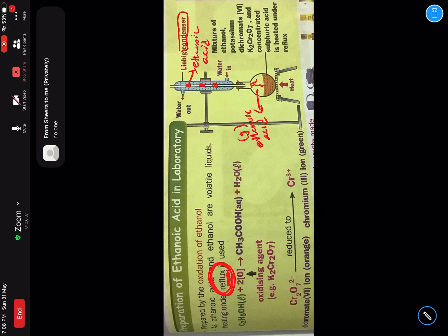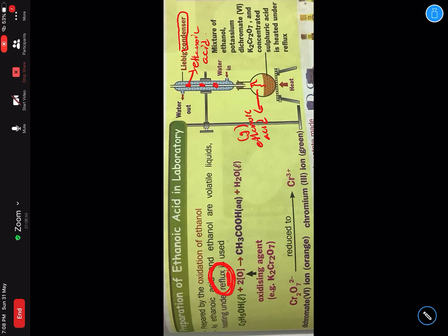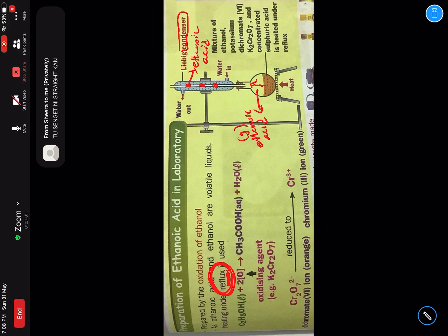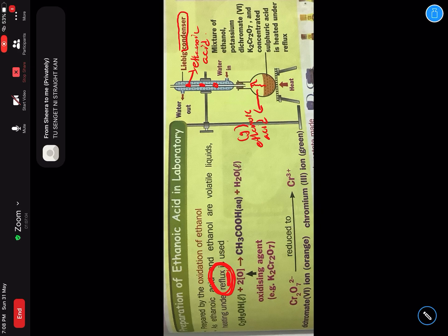Jangan keliru between reflux experiment dengan distillation - penyulingan dengan reflux. Kedua-duanya menggunakan liebig condenser. Tetapi, kedudukan - the position of the liebig condenser will be different for distillation and also reflux. Distillation, tujuan utama adalah untuk mendapatkan hasil ataupun untuk pekatkan hasil tersebut. Tapi reflux ni dibuat untuk melengkapkan tindak balas tersebut - to complete the chemical reaction. Dua benda yang berbeza.